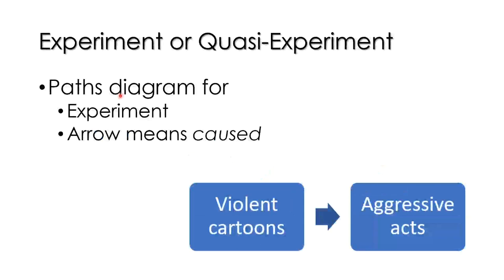When we have a path diagram for an experiment, the arrow means 'caused,' as in violent cartoons caused aggressive acts, because this is an experiment. One reason why we do experiments is that we want to be able to assert cause — that the IV causes the DV. And if we do an experiment correctly, we have that ability.